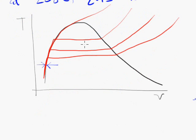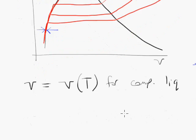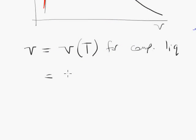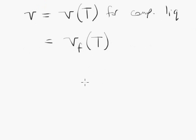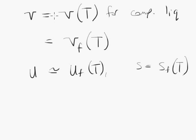So mathematically, we could say that V is a function of temperature only. It's not a function of a second thermodynamic property, like most things are for compressed liquid. And a bit more specifically, V is equal to Vf, the volume of saturated liquid at the same temperature. And it turns out that the same is true for internal energy and the same is true for entropy, for compressed liquid. And I should have an approximately equal sign up there as well.